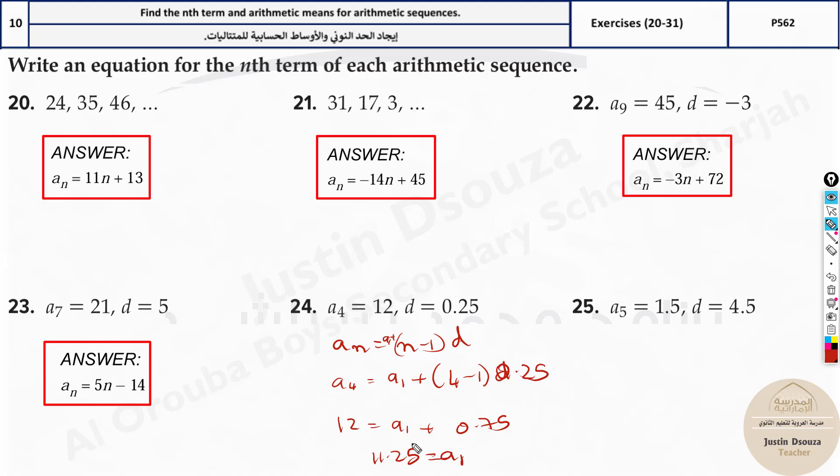So once you know what is a_1, you can easily solve the other terms. Write the equation. a_n equals 11.25 plus n minus 1 times 0.25. Now you can multiply this inside. It will be 11.25 plus 0.25n minus 0.25. Over here it's n. So the final answer will be 0.25n plus 11.